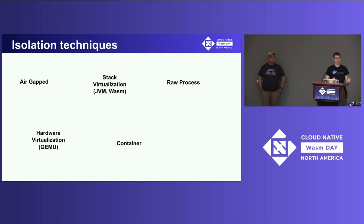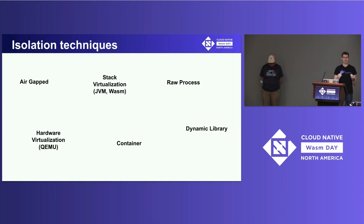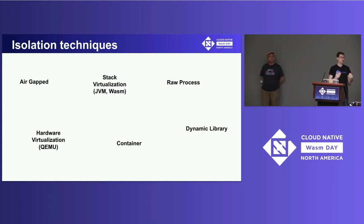Mac OS, for example, has started locking things down — if you touch sensitive things, it'll prompt the user for permission. And finally on the other extreme, dynamic libraries have well-defined interfaces: you can get a header file that tells you exactly what inputs go in and what outputs come out, and you can share memory inside the process to get really high performance.